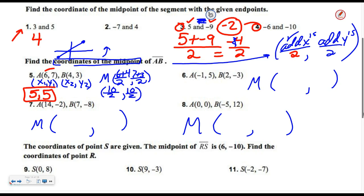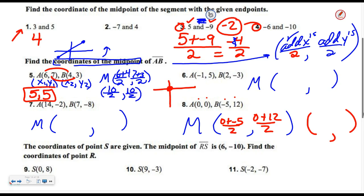That one you could have done with common sense — you can see five is right in the middle. But if you can't, you add the X's, divide by two, add the Y's, divide by two. Let's look at number eight. Grab the first coordinates and divide by two; grab the Y coordinates and divide by two. Your answer is a point, so make sure you put brackets and a comma. If A is at zero, zero and B is five to the left and twelve up, this formula gets you right to the location of the middle — negative five over two, which is negative two and a half, and twelve over two, which is six.